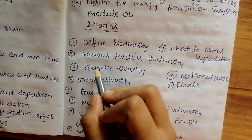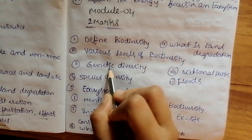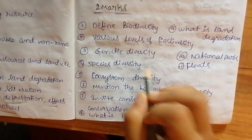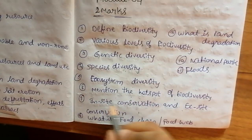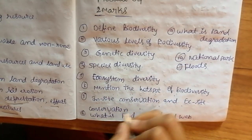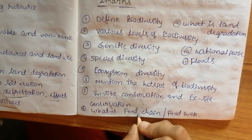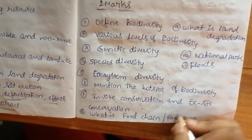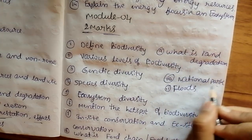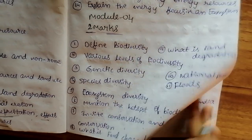The 2-mark questions include: define biodiversity, various levels of biodiversity, genetic diversity, species diversity, ecosystem diversity, mention the hotspot of biodiversity, in-situ conservation and ex-situ conservation, what is food chain or food web, what is land degradation, what is national park, and what is floods.